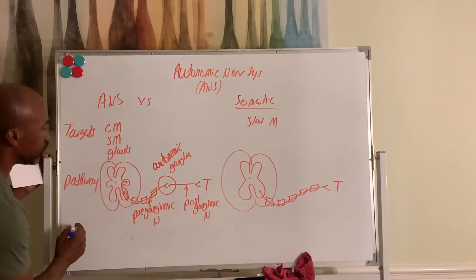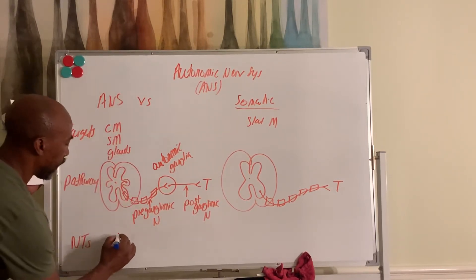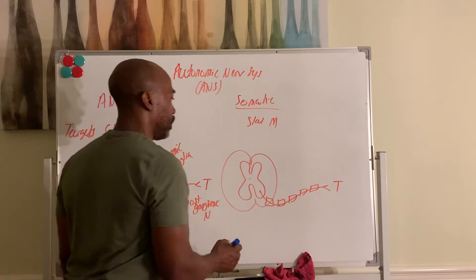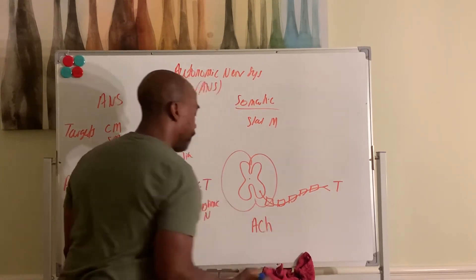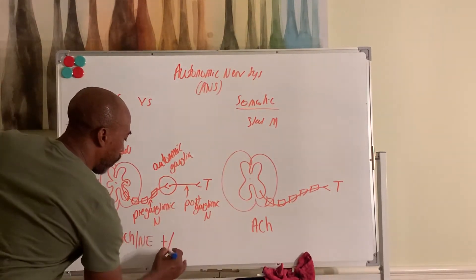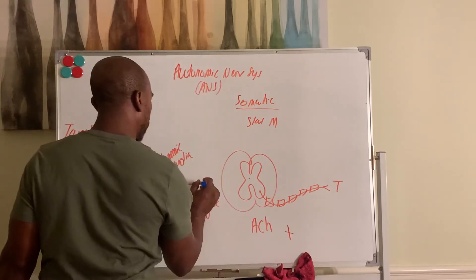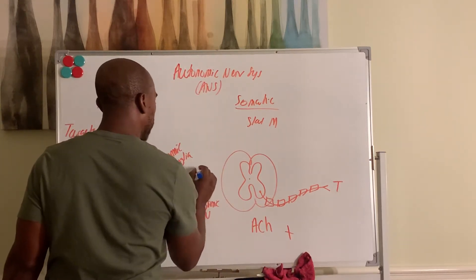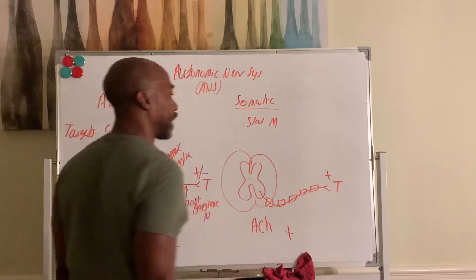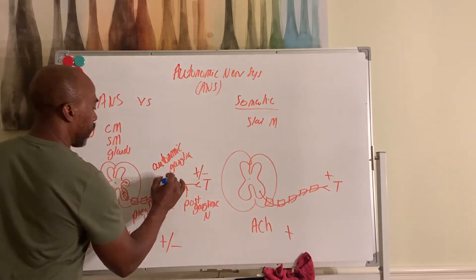Then the neurotransmitters that are released. So the ANS uses acetylcholine, ACH, and norepinephrine as chemicals. The somatic nervous system only uses ACH. Furthermore, the effects are, this system can be either excitatory or inhibitory. Over here, the somatic nervous system is always excitatory. For the ANS, it can either be excitatory or inhibitory. For the somatic nervous system, it's always excitatory. It always activates the target. Here, it may inhibit the target. And here, in the ganglia, it's always excitatory as well.